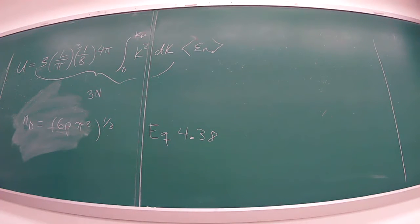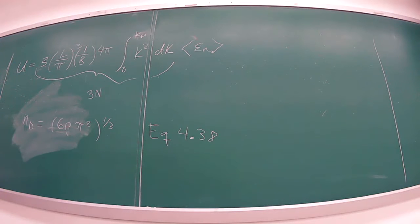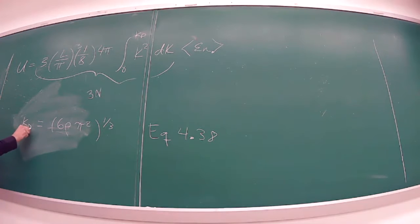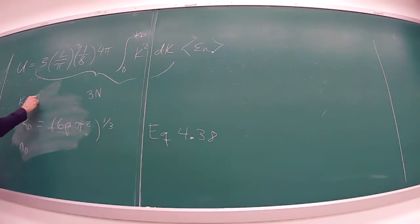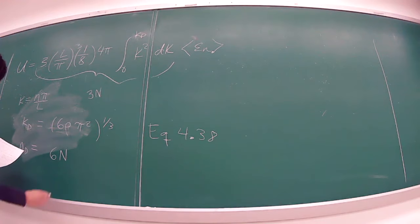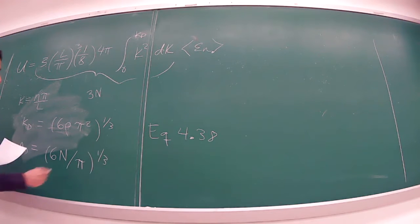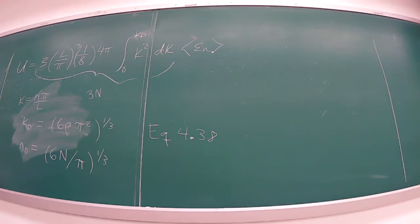A student asked: isn't that kd? Yes — I derived it as kd equals... since k equals nπ/L, then Nd equals (6N/π)^(1/3). Good catch, thank you. So equation 4.38 — either form — they are the same.